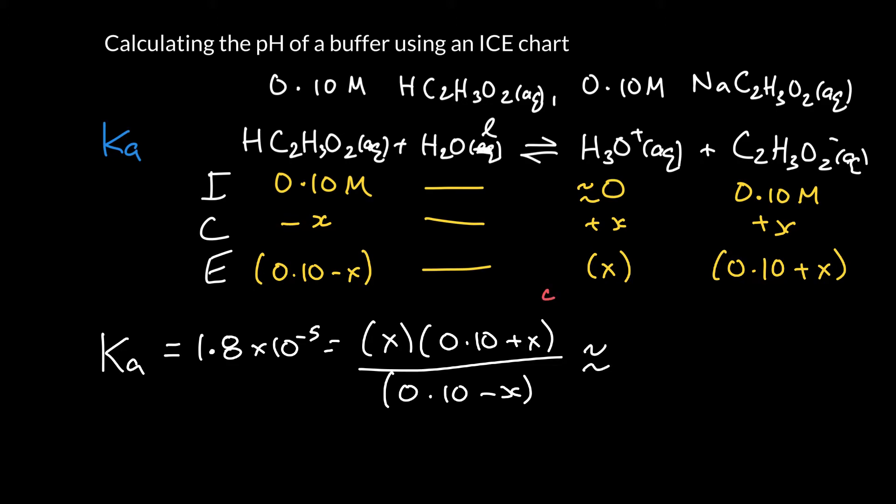Well, we can make an assumption. If x is a lot smaller than 0.1, then if we add it or subtract it away from 0.1, that doesn't change it at all. So we can say that's approximately equal to x times 0.1. If we add a small number to 0.1, it's still going to be 0.1. And if we take away a small number from 0.1, it's still going to be 0.1.